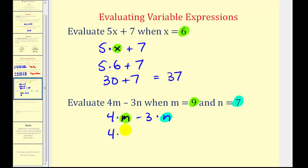So we'll have 4 times 9 minus 3 times 7. So we'll first multiply, so we'll have 36 minus 21. Well 36 minus 21 is equal to 15. So 4m minus 3n is equal to 15 when m is 9 and n is 7.